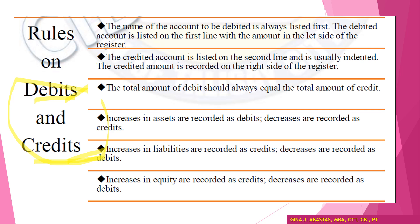The rules on debits and credits are as follows. The name of the account to be debited is always listed first, with the amount on the left side of the register. The credited account is listed on the second line and is usually indented, with the credited amount recorded on the right side. The total amount of debit should always equal the total amount of credit. Increases in assets are recorded as debits; decreases are recorded as credits. Increases in liabilities are recorded as credits and decreases as debits. Increases in equity are recorded as credits and decreases as debits.